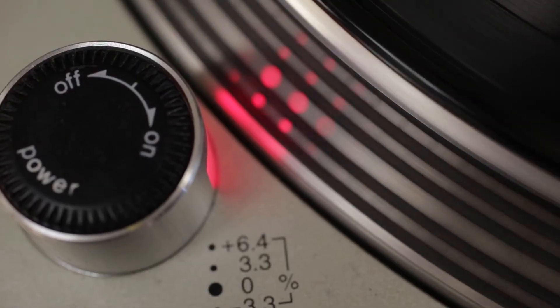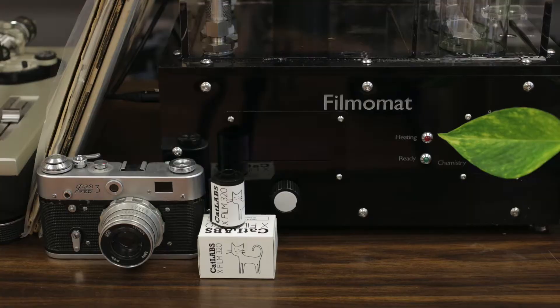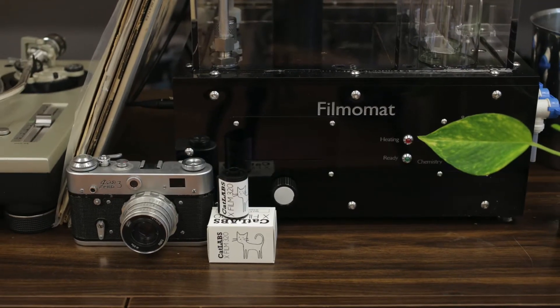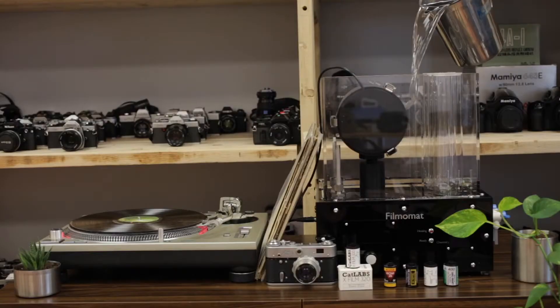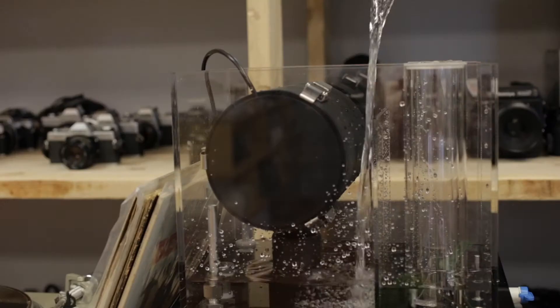The Filmomat changes all of these preconceptions. A compact, fully automatic developing machine that has intuitive controls and a stylish design that's, in my opinion, reminiscent of an 80s mad scientist.